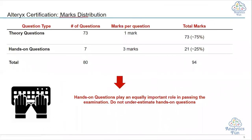Coming to marks distribution: out of 80 total questions, 73 are theory questions worth 1 mark each, and 7 are hands-on questions worth 3 marks each. This gives 73 marks from theory and 21 marks from hands-on, for a total of 94 marks. The passing score is 80%, which means approximately 75% of marks come from theory and 25% from hands-on questions.